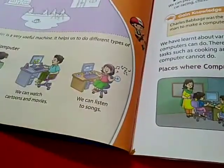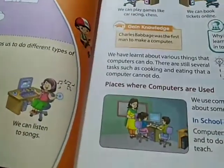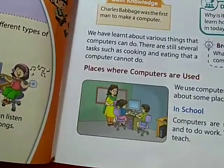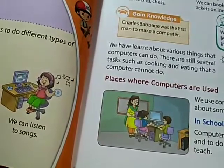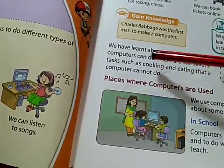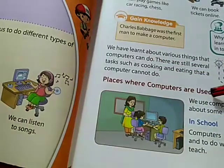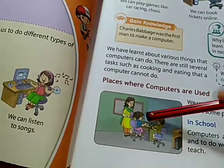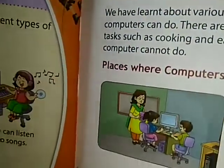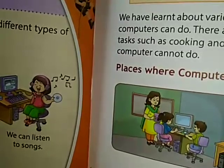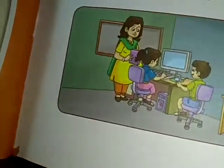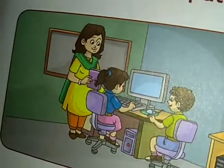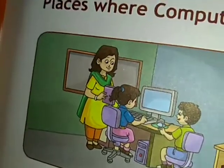Places where computers are used. We have learnt about the various things that a computer can do. There are still several tasks such as cooking and eating that a computer cannot do. Computers are used in schools to learn new things and to do work. Teachers use computers to teach, and children use them for learning — it looks like our computer lab, isn't it children?